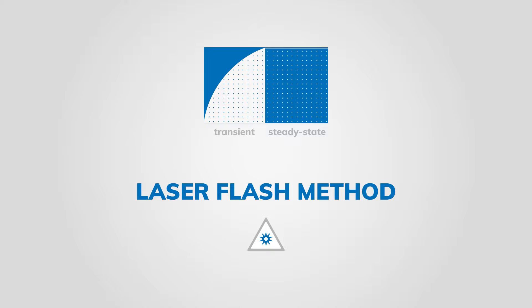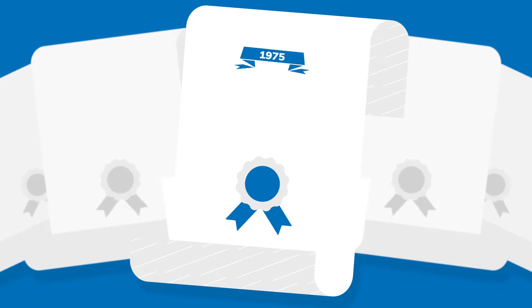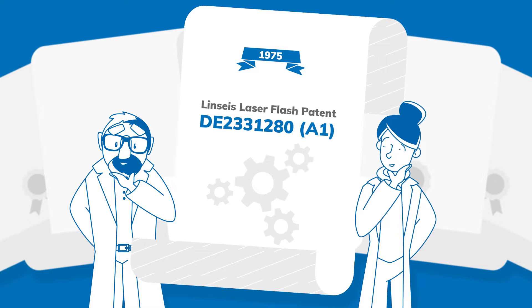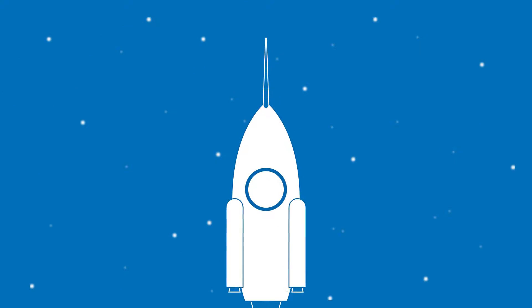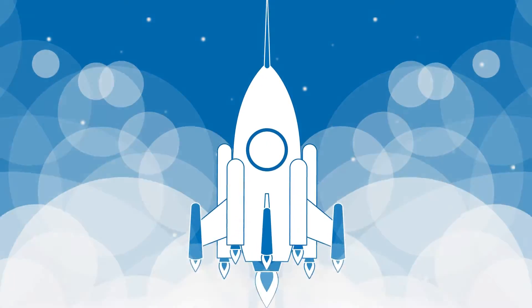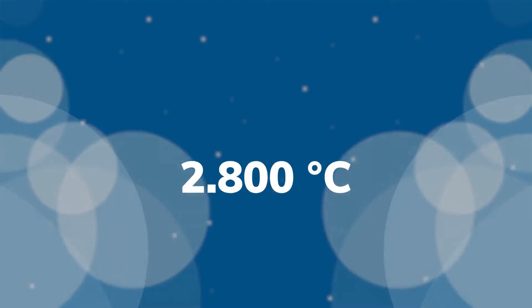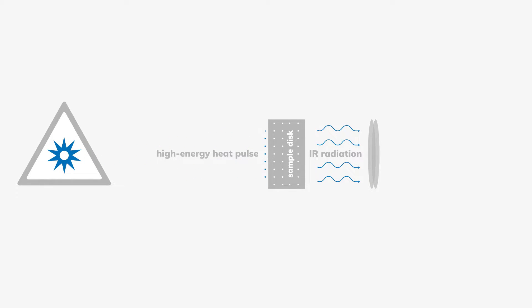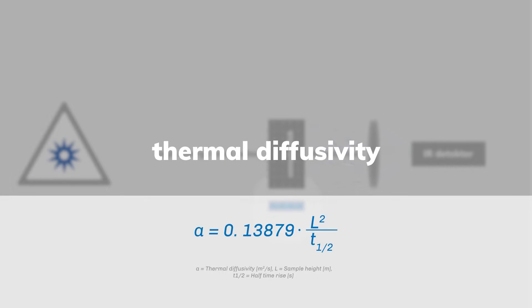The laser flash method is a transient measurement method based on a patent from 1975. Despite its high cost and complexity, it is still widely used today, and for a good reason. With the laser flash method, materials can be tested automatically even at extreme temperatures of up to 2,800 degrees Celsius. The sample disk is exposed on one side to a short, high-energy heat pulse from a laser or flash lamp. The resulting temperature rise on the opposite side is recorded with an infrared detector. In relation to the sample thickness, the thermal diffusivity can thus be calculated using a mathematical thermal conductivity model.